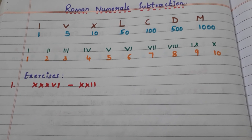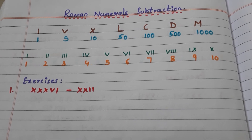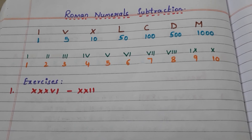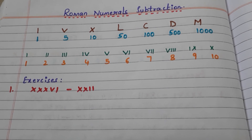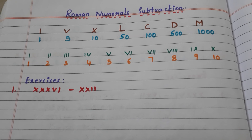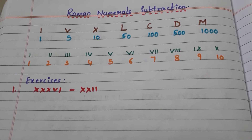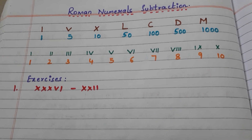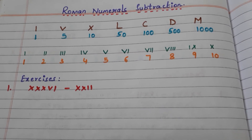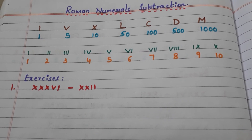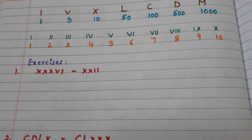Hi all, welcome back to my channel. In this video we will have a look at how to subtract two Roman numerals. We all know that there are seven basic symbols in Roman numerals: I, V, X, L, C, D, M. I means 1, V means 5, X means 10, L means 50, C means 100, D means 500, and M means 1000. Using these symbols and values we are going to subtract Roman numerals.